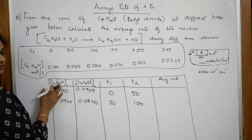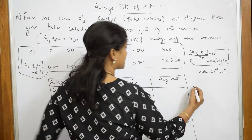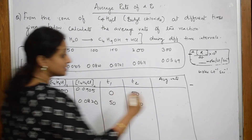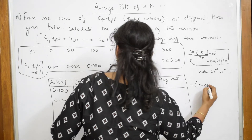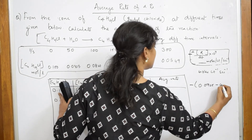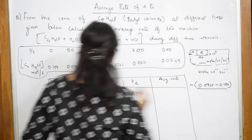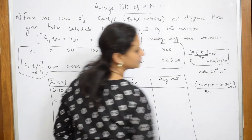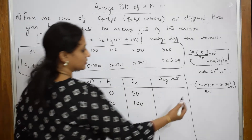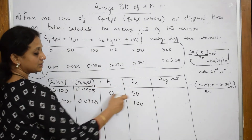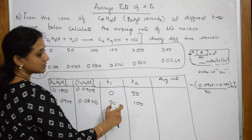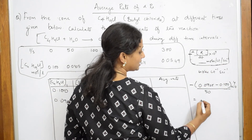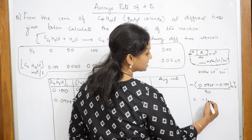This is your higher value and this is the average I have to take out. Substitute this value. Observe carefully — there is a minus sign because these are reactants. So: 0.0905 minus 0.100, divided by 50 minus 0, which is 50, multiplied by 10 raised to 4. Higher minus lower, higher minus lower. Once you solve this and multiply by 10 to the 4, you will get an answer of minus 1.9.